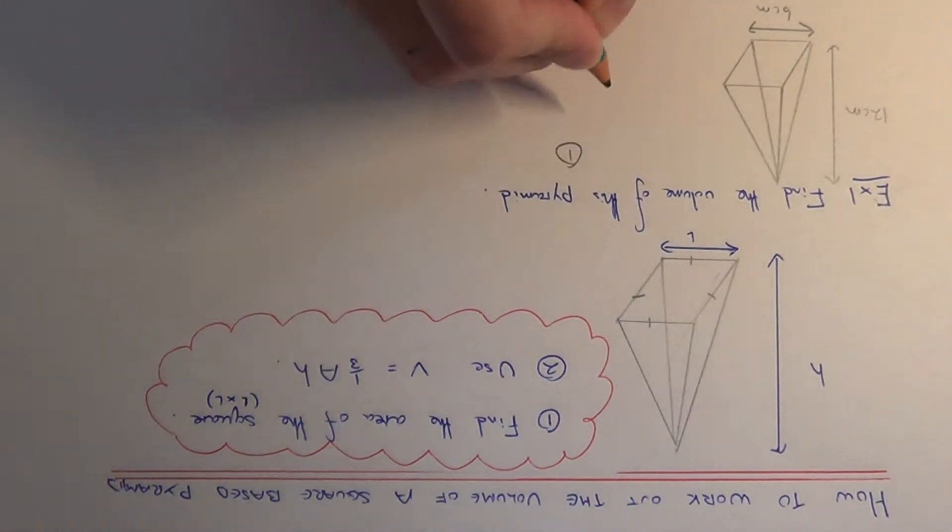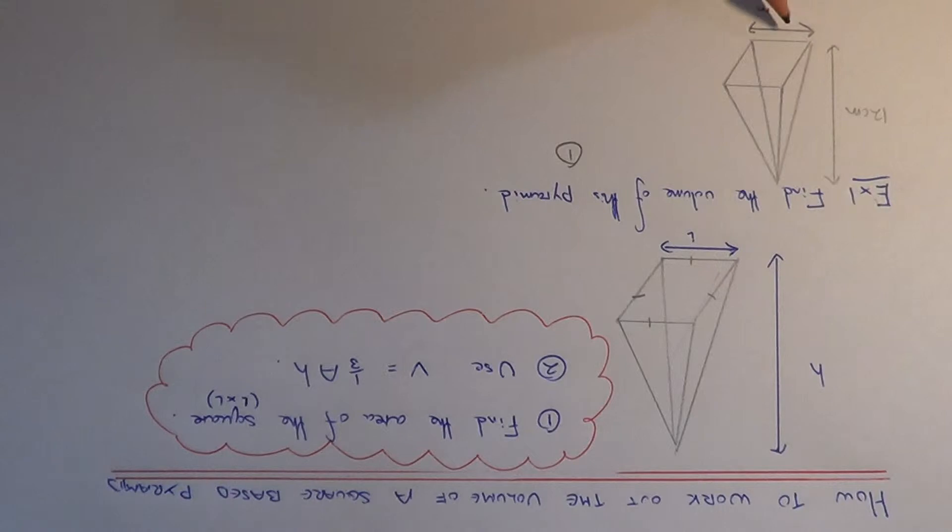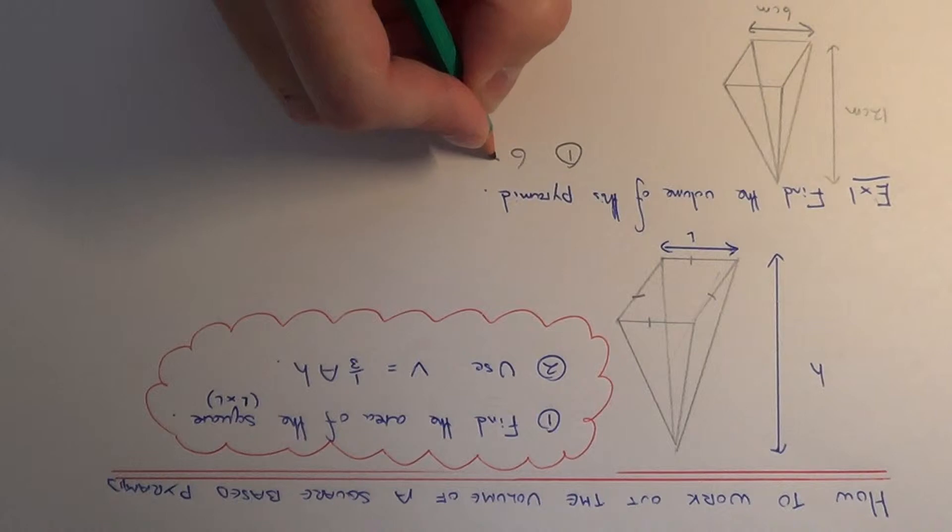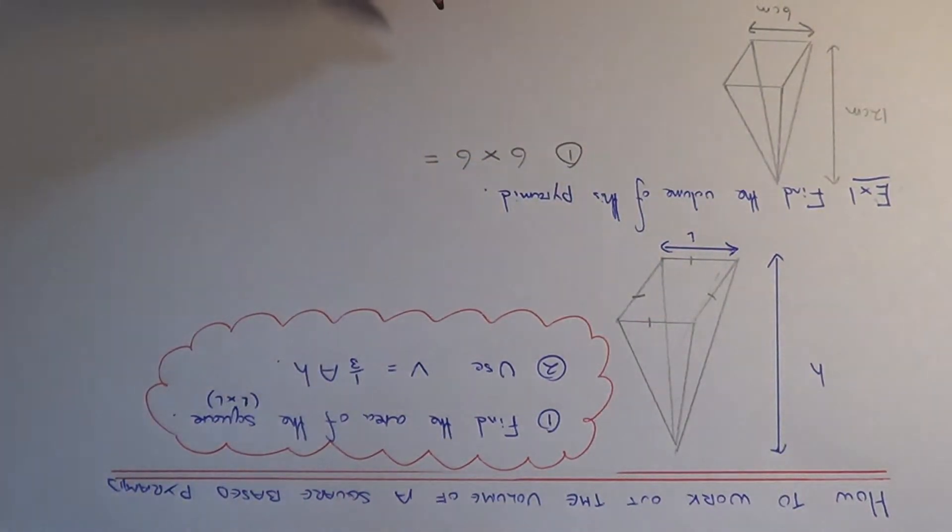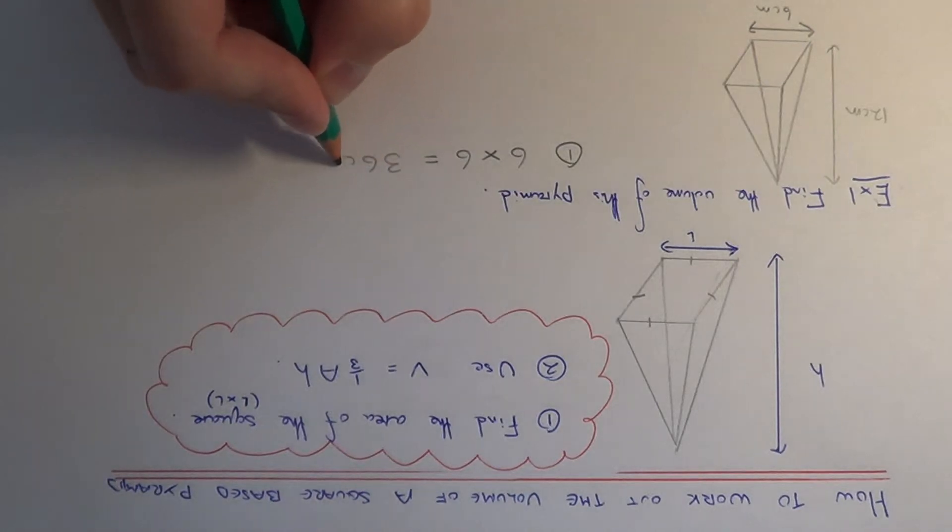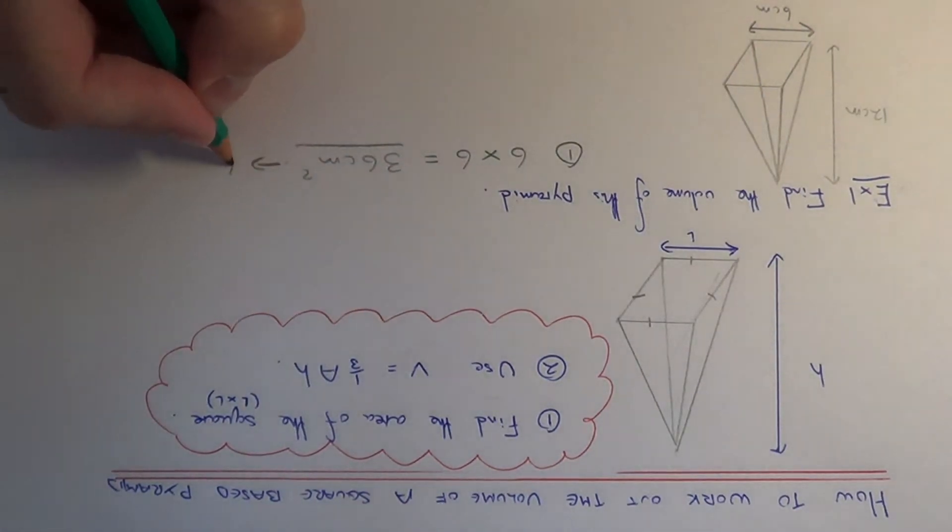The first step is to work out the area of the square at the bottom of the pyramid. You do this by multiplying the two sides together. So 6 times 6 is 36 cm squared. This is the area.